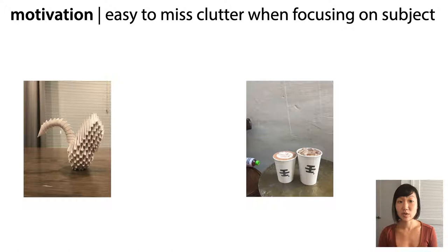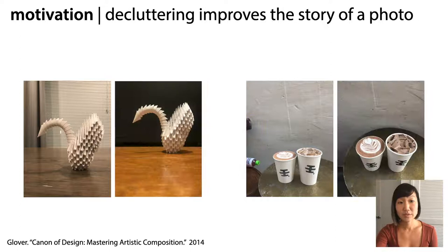It can be incredibly frustrating if you take a photo only to realize after the fact that there is some unwanted clutter in the background that distracts from the main focus of the image. Notice here, in the left image, the subject blends into the pattern behind it. And in the right image, there are unwanted objects along the left border. Reframing to clarify the subject and remove these distractors really helps improve these images and better directs the viewer's eyes.